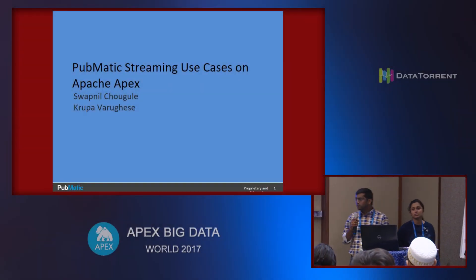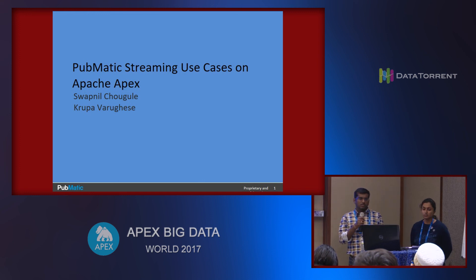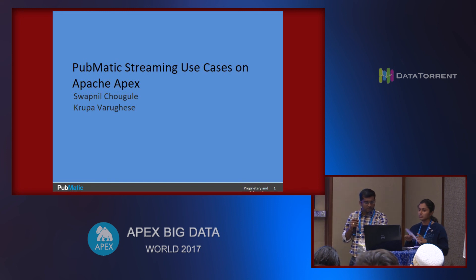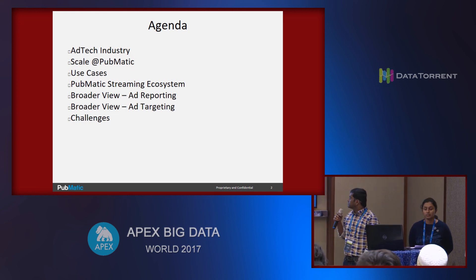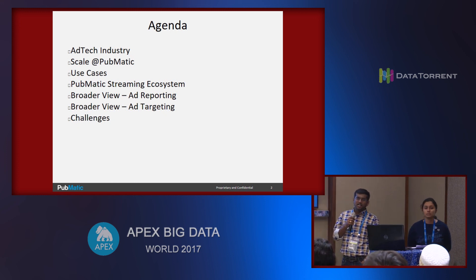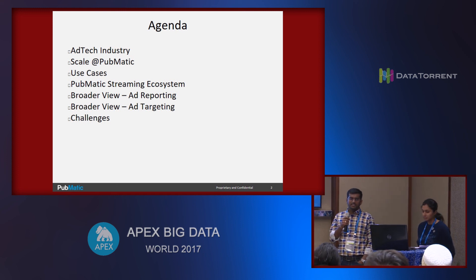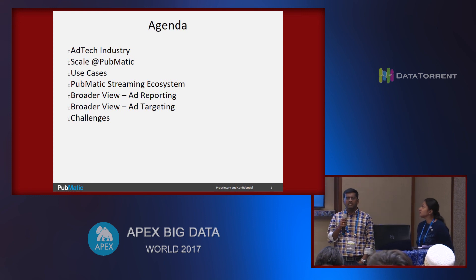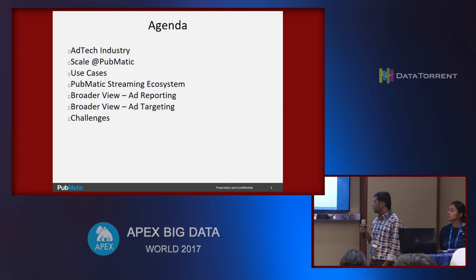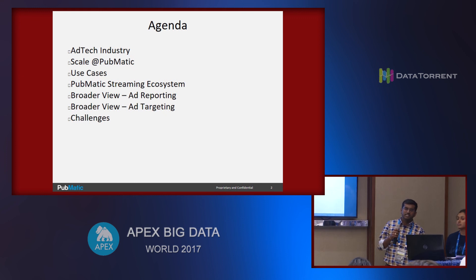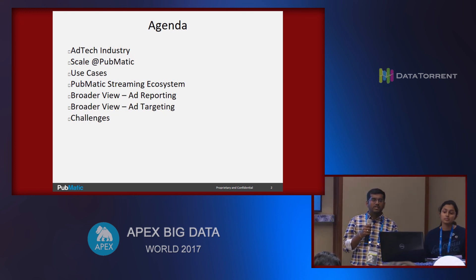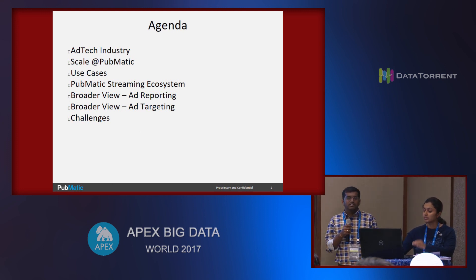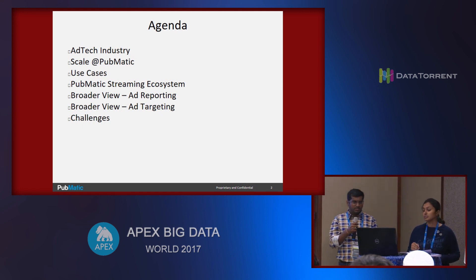Good afternoon. We are here to showcase the use cases of PubMatic. Myself and my colleague Krupa Varghese are presenting PubMatic streaming use cases on Apache Apex. The outline covers what the ad tech industry is, what PubMatic is, how it functions, what data points we generate for actionable insights, the data scale at PubMatic, real-time use cases, and the PubMatic streaming ecosystem. We have two use cases: customer reporting and ad targeting, and we'll cover operational aspects and challenges of developing those applications.